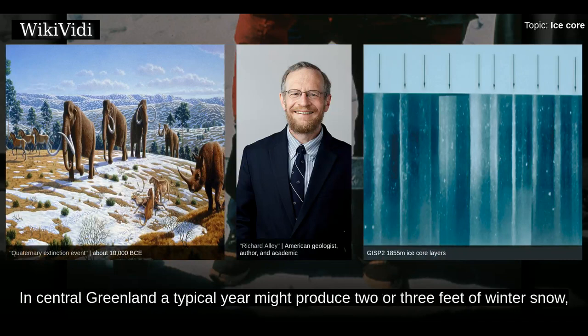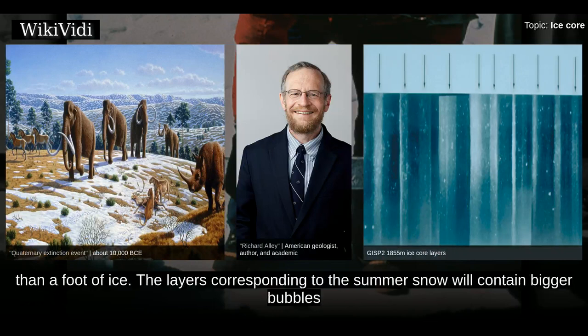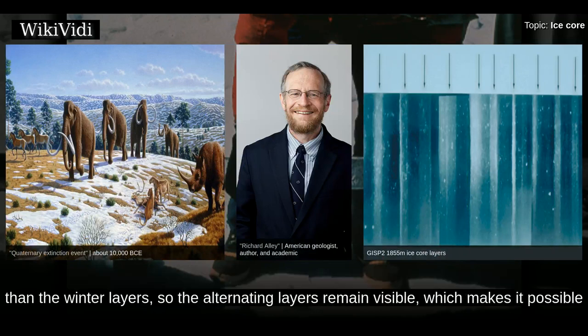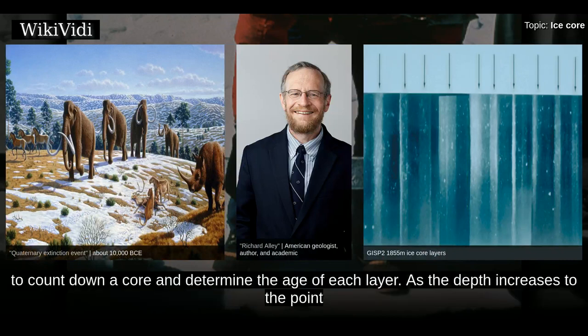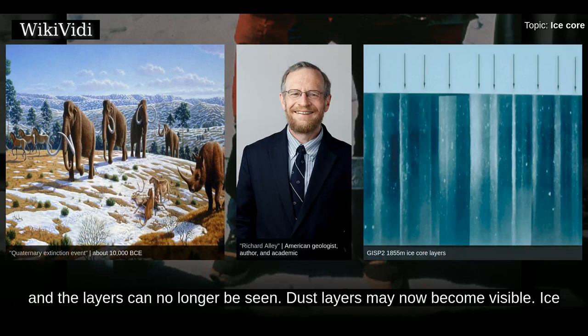In central Greenland, a typical year might produce two or three feet of winter snow plus a few inches of summer snow. When this turns to ice, the two layers will make up no more than a foot of ice. The layers corresponding to the summer snow will contain bigger bubbles than the winter layers, so the alternating layers remain visible, making it possible to count down a core and determine the age of each layer. As the depth increases to the point where the ice structure changes to a clathrate, the bubbles are no longer visible and layers can no longer be seen; dust layers may then become visible.